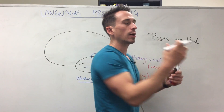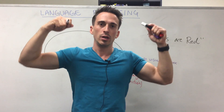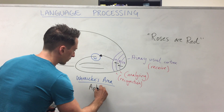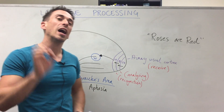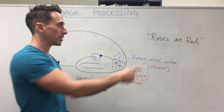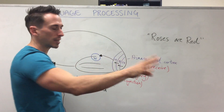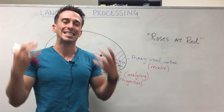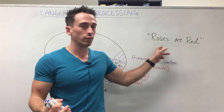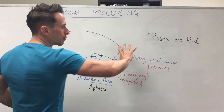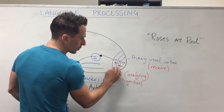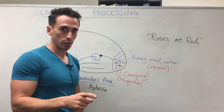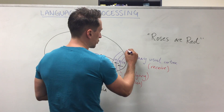With Wernicke's area active, "Roses are red" is able to produce some sort of understanding. If somebody had damage to Wernicke's area, it's called Wernicke's aphasia, which means you have a problem with understanding words. The other areas aren't damaged — you can still see something, still analyse the lines and spacing and texture, and still recognise that something may say "roses" or "red." But it doesn't mean anything to you; you can't understand it. It's basically useless information — just a bunch of lines. Areas 18 and 19 are called either the secondary and tertiary visual cortex, or the association visual cortex.